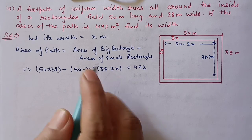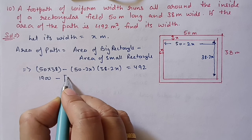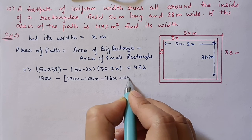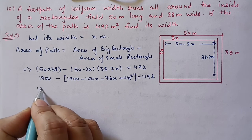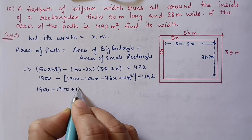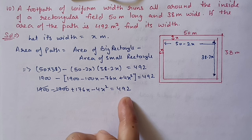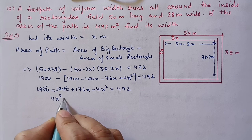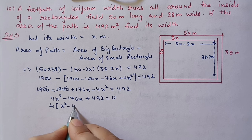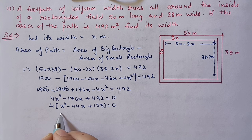Expanding: 1900 minus (1900 minus 100x minus 76x plus 4x squared) equals 492, which gives 176x minus 4x squared equals 492. Rearranging: 4x squared minus 176x plus 492 equals 0. Dividing by 4: x squared minus 44x plus 123 equals 0.